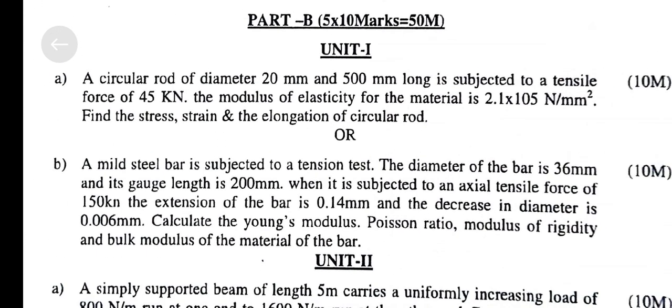Part B: 10 marks questions. Unit 1, Question A. A circular rod of diameter 20mm and 500mm long is subjected to a tensile force of 45kN. The modulus of elasticity for the material is 2.1 × 10^5 N/mm². Find the stress, strain, and elongation of circular rod.